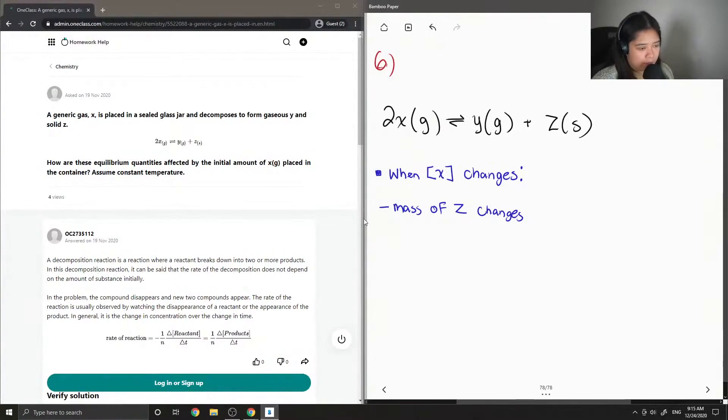Obviously, because the more X you have as a reactant, the more Z solid can be produced. So when the concentration of X changes, then the two gases, which is X and Y, their concentrations change as well. So obviously for X, that will change, and the concentration of Y at equilibrium changes.